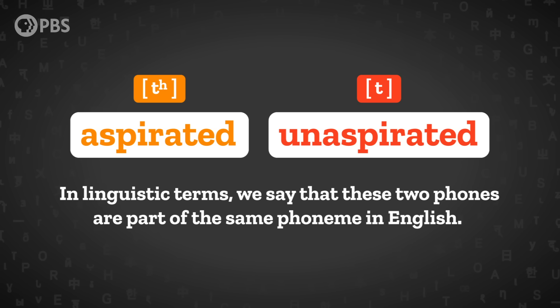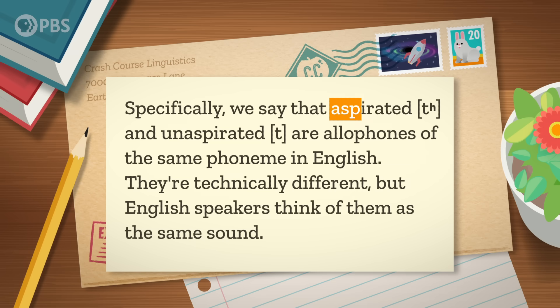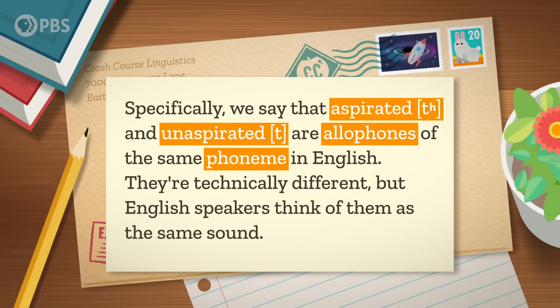In linguistic terms, we say that these two phones are part of the same phoneme in English. Specifically, we say that aspirated t and unaspirated t are allophones of the same phoneme in English.